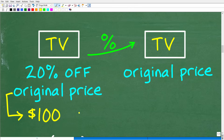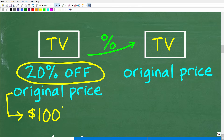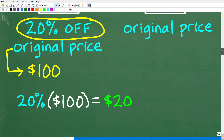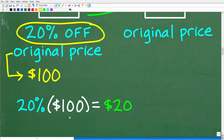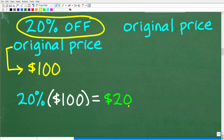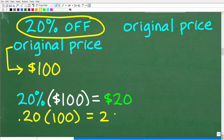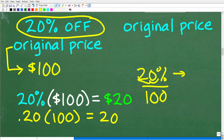If the original price is $100 and it's 20% off, we have to figure out what 20% off $100 is. We need to find 20% of 100. To find a percent of a number, remember we need to change the percent to a decimal. So 20% is the same thing as 0.20. We multiply that by 100, and we get 20. To write a percent as a decimal, we divide by 100 or move the decimal point two places to the left.